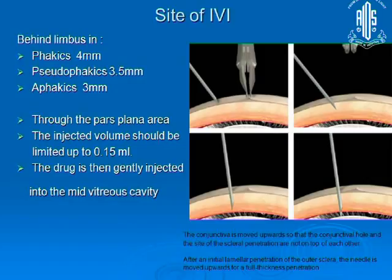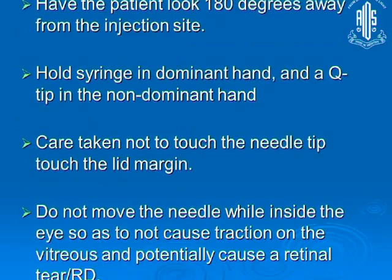If you are repeating injections, it is better to avoid the same site that you have previously used — shift your needle a little bit each time. The injected volume should be limited to 0.15 ml, and the drug is gently injected into the mid-vitreous cavity. Have the patient look 180 degrees away from the injection site, hold the syringe in your dominant hand with a Q-tip, and do not — I repeat — do not touch the lid margin with your needle. That is the biggest source of infection. Do not move the needle while inside the eye or you will induce vitreous traction and retinal detachment.